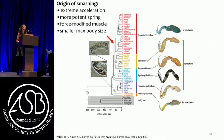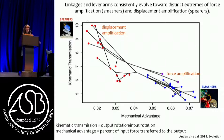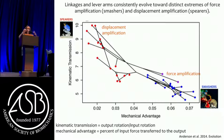Looking at kinematic transmission — output rotation divided by input rotation for a forward linkage — relative to mechanical advantage, defined as percent force transfer to the output, and overlaying the evolutionary tree onto these points, we see a consistent, persistent, and statistically significant move toward a different mechanical space between smashers and spearers. Spearers are all about displacement amplification; smashers are all about force amplification. That's an example of incorporating phylogeny into mechanical analysis to reveal deeply embedded trends.